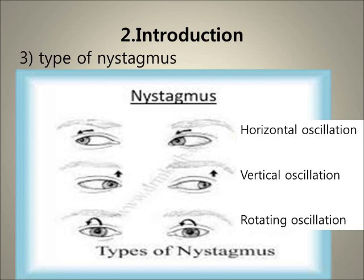There are several types of nystagmus. Nystagmus is a condition of involuntary eye movement. The oscillations may occur as horizontal oscillations, vertical oscillations, or combinations such as rotating oscillations. It can also occur in only one eye or in both eyes.